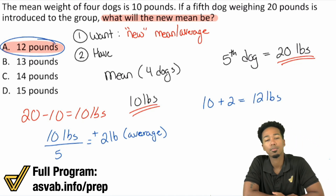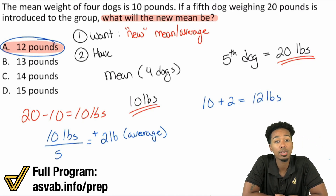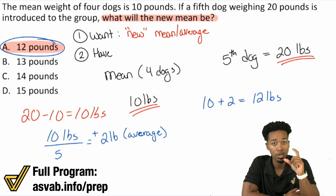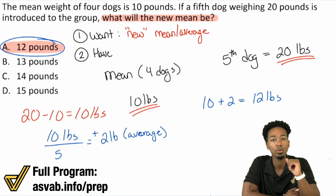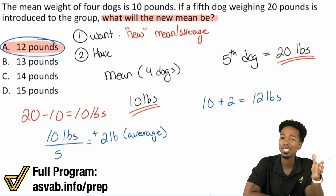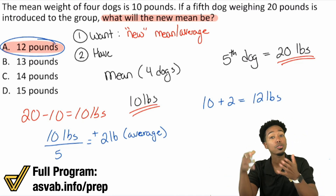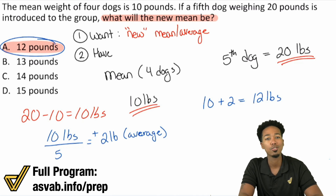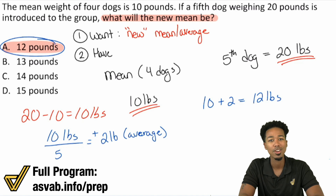That strategy, long story short: to calculate a new mean after introducing an additional subject, calculate the difference between the mean and the new value, then divide that value by the new total count. From there, add it back to the old average to get the new average and you're done. Feel free to write that down. If you look at the formula it'll make sense, but if not, do it the way we previously did. Either way, this is a type of problem you do want to know — it's a very common test question. Ask me any questions if you need help, and let's keep raising our scores.